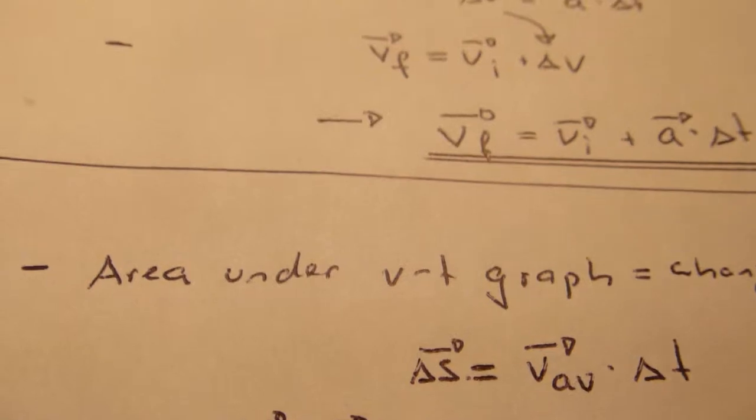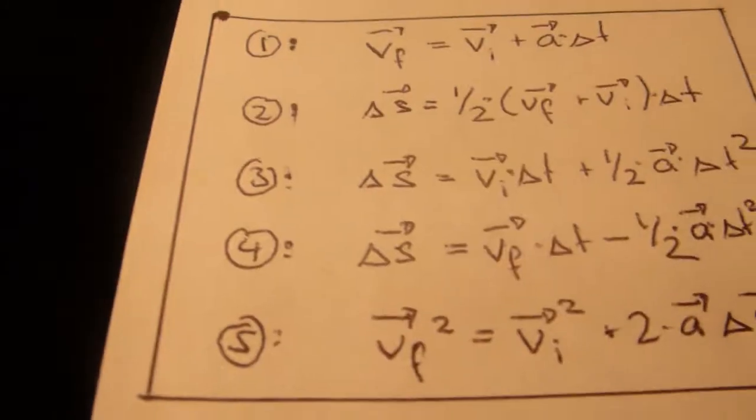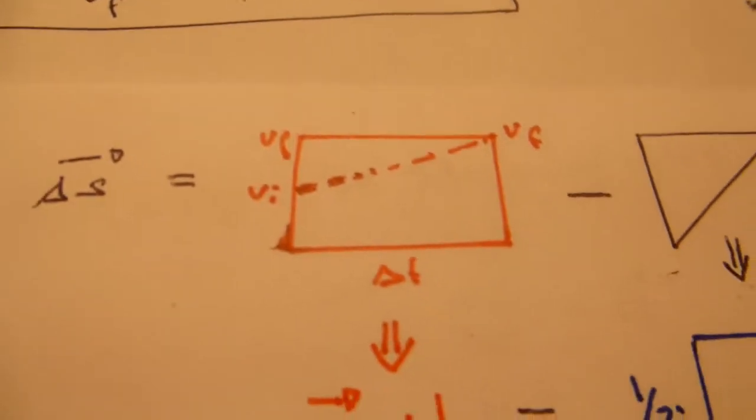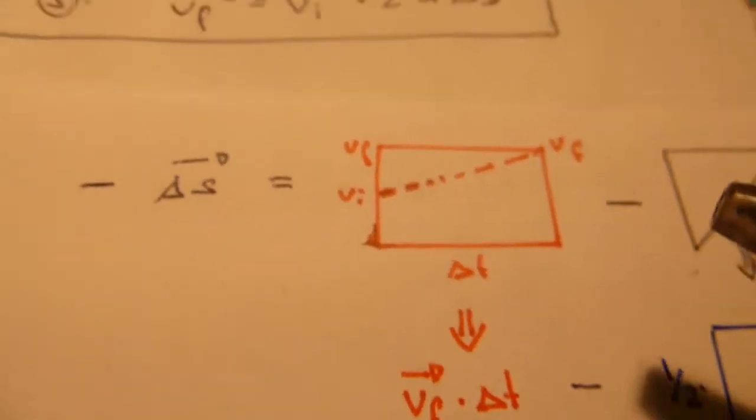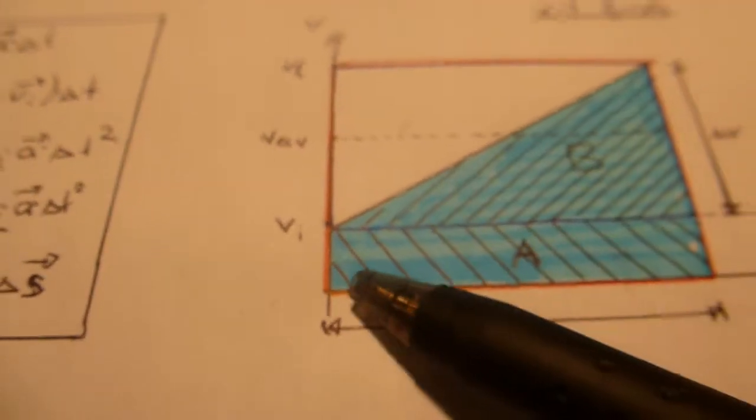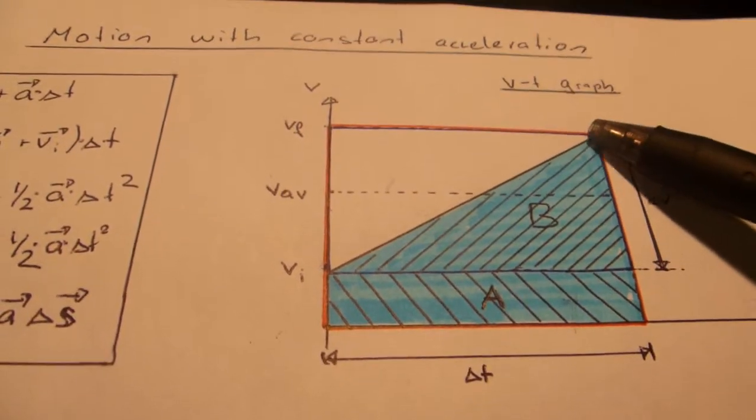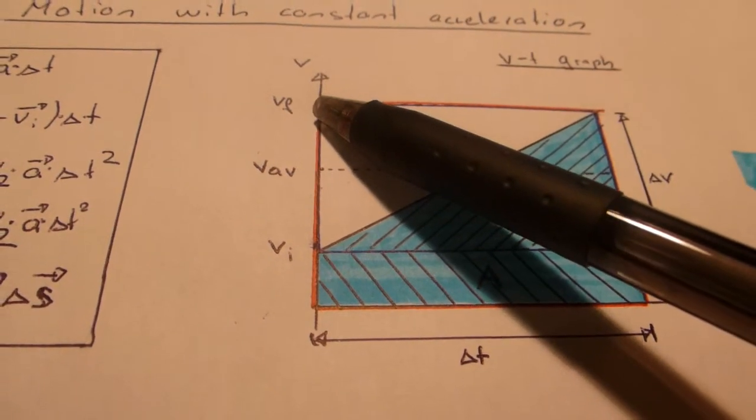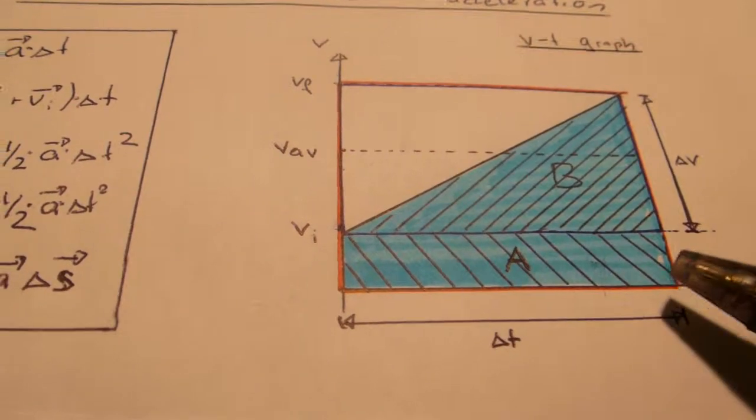Now if you look at our fourth equation, it looks kind of similar, and it is. This time we're starting with the big red square, which is the area right here, which is nothing else than V final times delta T.